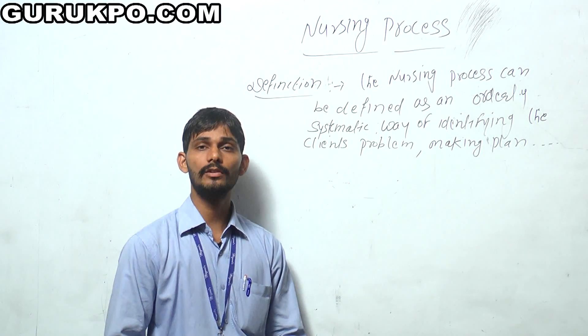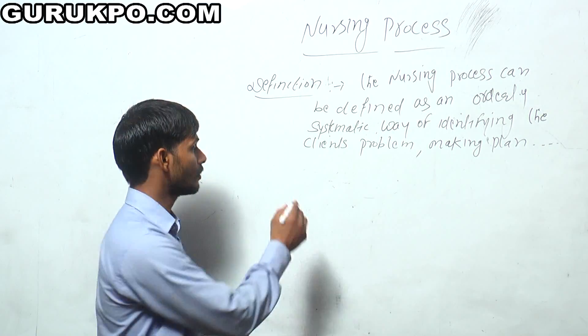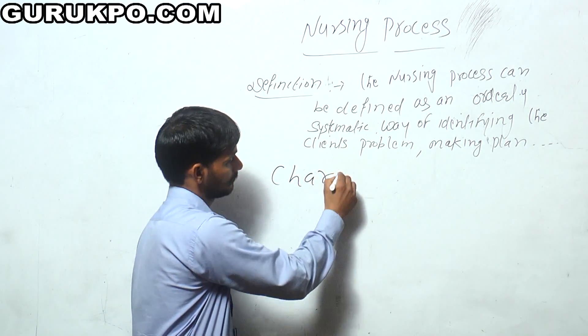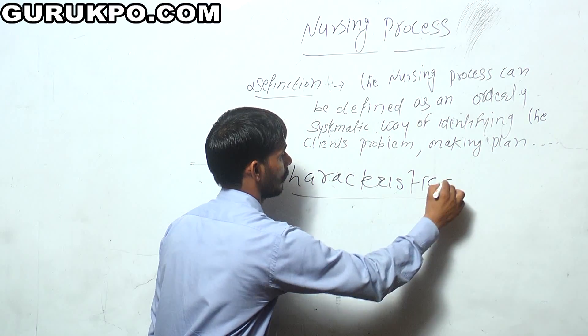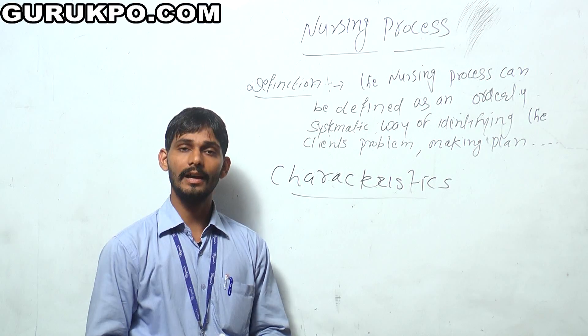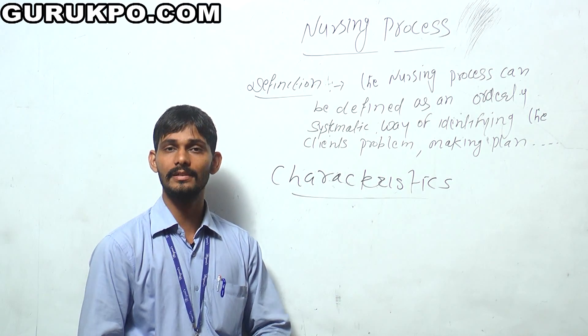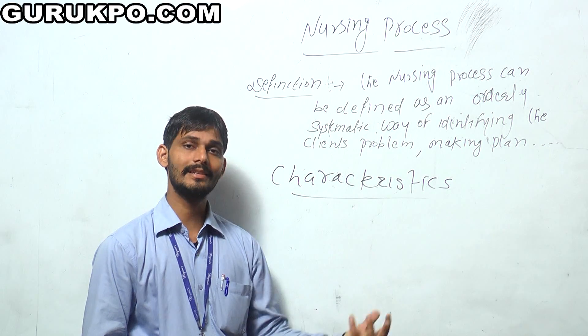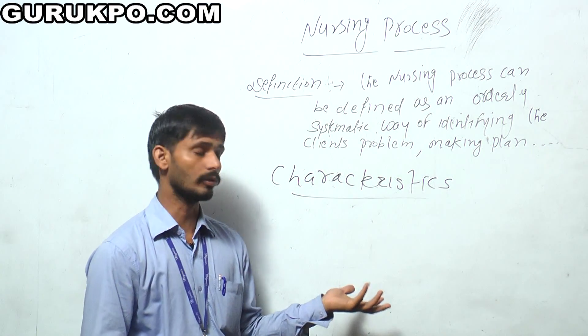Characteristics of nursing process: It is a framework in which we have to provide all the data of the patients related to their history—present history, past history, everything we have to include.